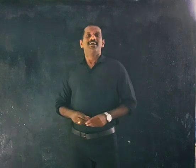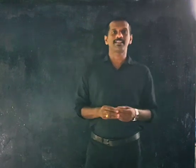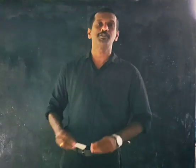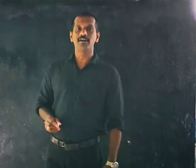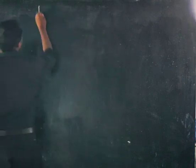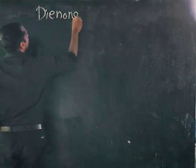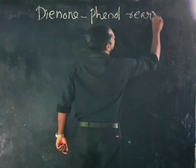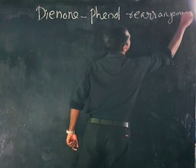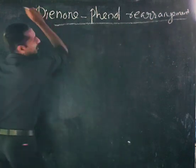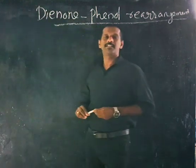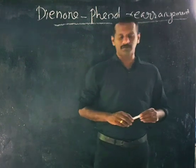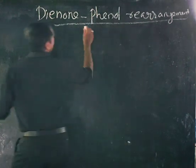Good morning. Last class we discussed general rearrangements, and the next rearrangement is the Dienol-Phenol rearrangement. In Dienol-Phenol rearrangement, this is a type of carbon-to-carbon migration happening in aldehydes and ketones.